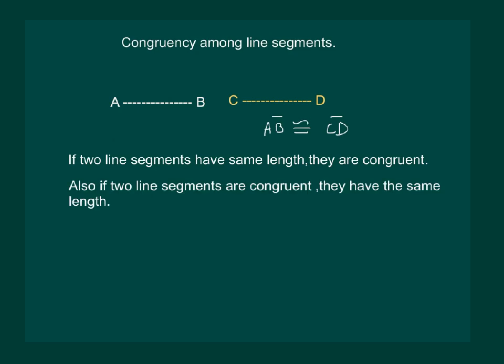Also, the converse is true. That means, if it is given that the two line segments are congruent, then we will have their lengths to be equal. That means, if AB is congruent to CD, then length of AB is equal to the length of line segment CD.